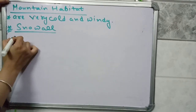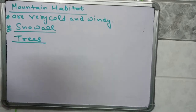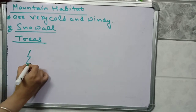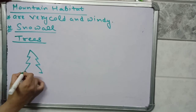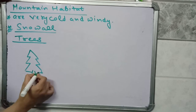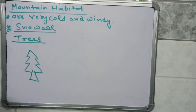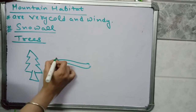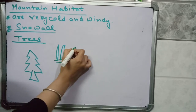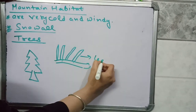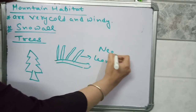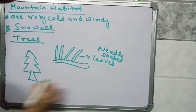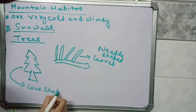If we talk about the trees present in mountain habitat, they are cone type in shape. Many cone-type trees are present in the mountain habitat. Some trees have leaves that are needle-like in shape — these are needle-shaped leaves on the branches.